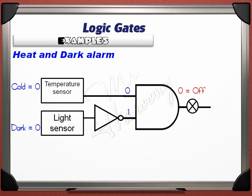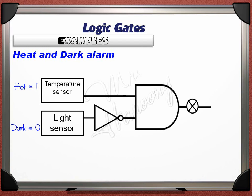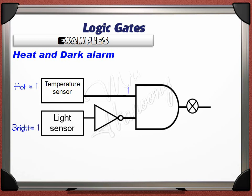With inputs 0 and 1, the AND gate gives OFF — no alarm. If cold and bright, signals are 0 and 1 from the sensors; the NOT gate inverts the 1 to 0, making AND gate inputs 0 and 0 — output is OFF. If hot and dark, temperature gives 1 and light gives 0; the NOT gate inverts 0 to 1, making AND gate inputs 1 and 1 — output is 1, bulb ON: ALARM. If hot and bright, signals are 1 and 1; the NOT gate inverts 1 to 0, so AND gate inputs are 1 and 0 — output is 0, bulb does not light.